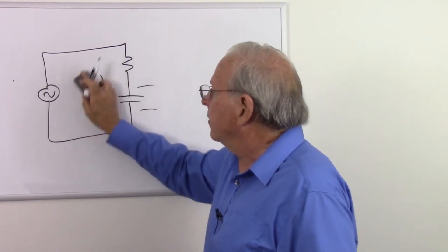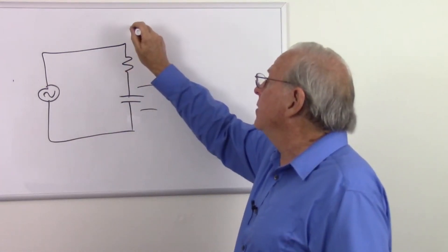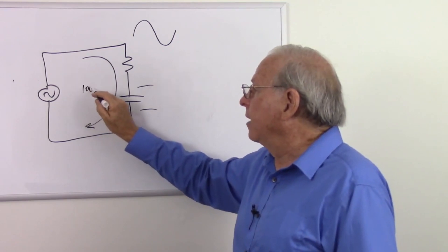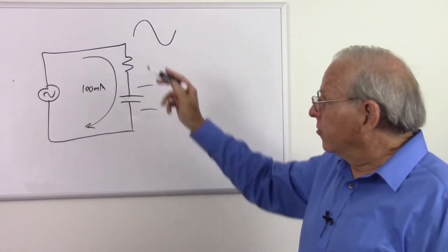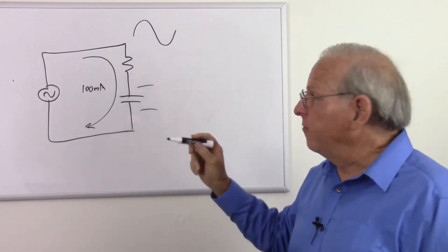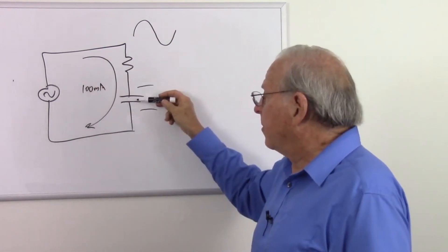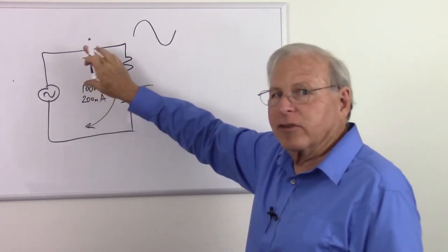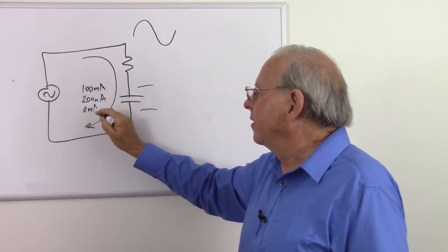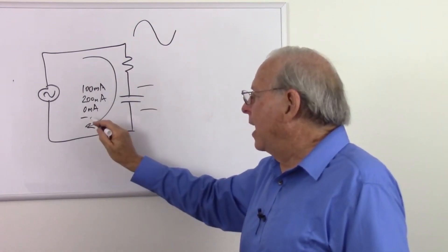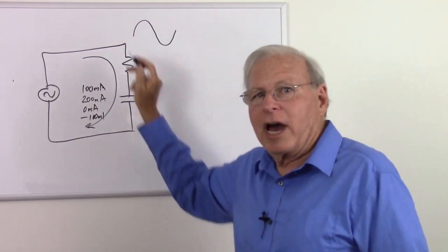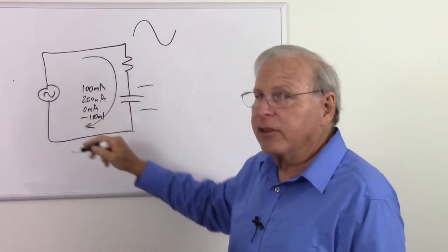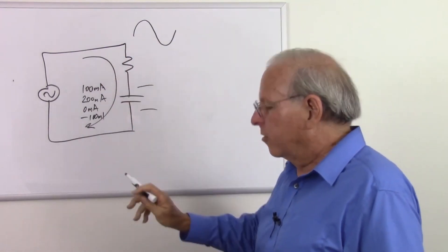Let's look at the current through this circuit. It's a series circuit, and as the current goes up and down — say the current is at 100 milliamps — where is that current? It's a series circuit, so the rule is: current is the same everywhere. The capacitor, the resistor, going through the source — as that increases to 200 milliamps or decreases to zero or goes to minus 100 milliamps, it's the same everywhere. Just because we're using alternating current doesn't mean the rules change.